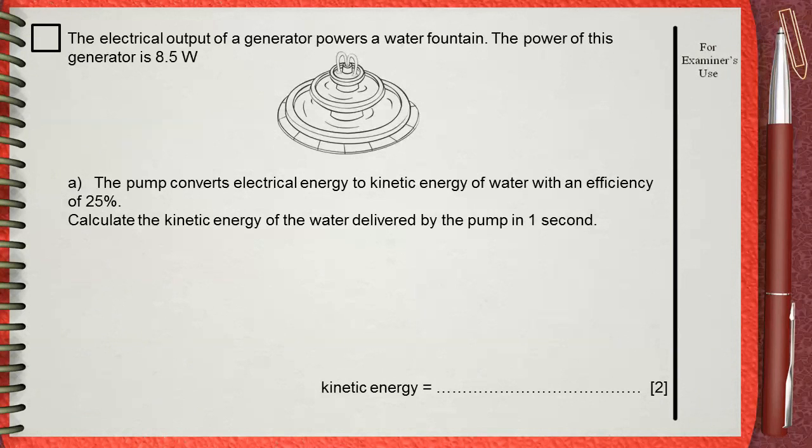The electrical output of a generator powers a water fountain. The power of this generator is 8.5 watts. Part a: The pump converts electrical energy to kinetic energy of water with an efficiency of 25%. Calculate the kinetic energy of the water delivered by the pump in one second.